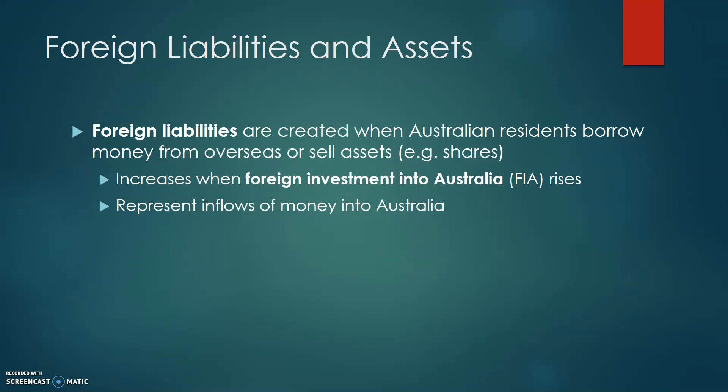The two key concepts we'll first cover are foreign liabilities and foreign assets. Foreign liabilities are created when Australian residents borrow money from overseas or sell assets. For example, if a Japanese non-resident were to lend money to an Australian mining firm, this exchange would build up Australia's foreign liabilities. Another example would be if a US investor were to buy shares in an Australian company — that is an example of Australian shares being sold, which would also result in an increase in foreign liabilities. The common theme is that both examples are cases of foreign investment flowing into Australia.